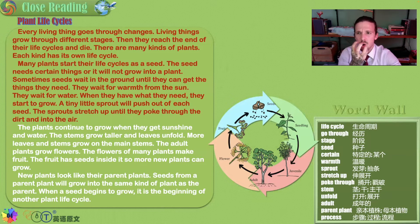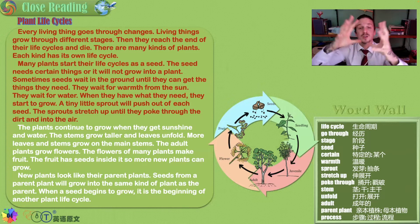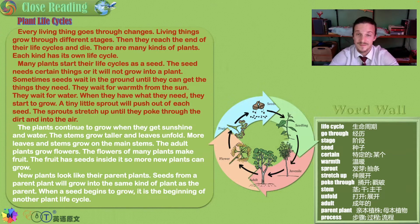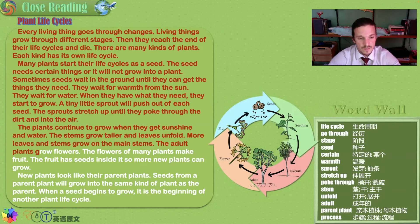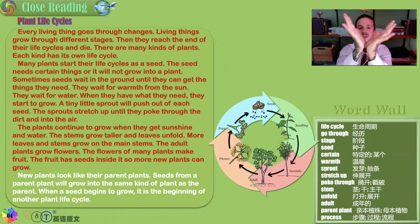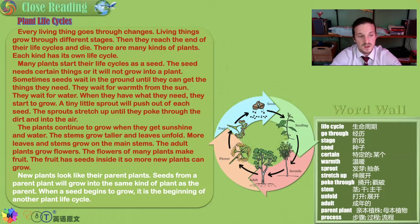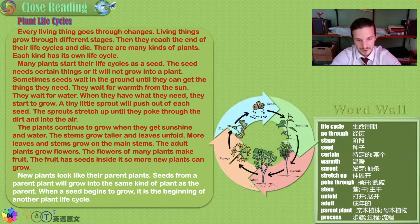Have you ever bit inside the core of an apple? You will see an apple seed that could grow into an entire apple tree. That's the life cycle of an apple. The plants continue to grow when they get sunshine and water. The stems grow taller and the leaves unfold. More leaves and stems grow on the main stems. The adult plants grow flowers, and the flowers of many plants make fruit, and the fruit has seeds inside it, so more new plants can grow.